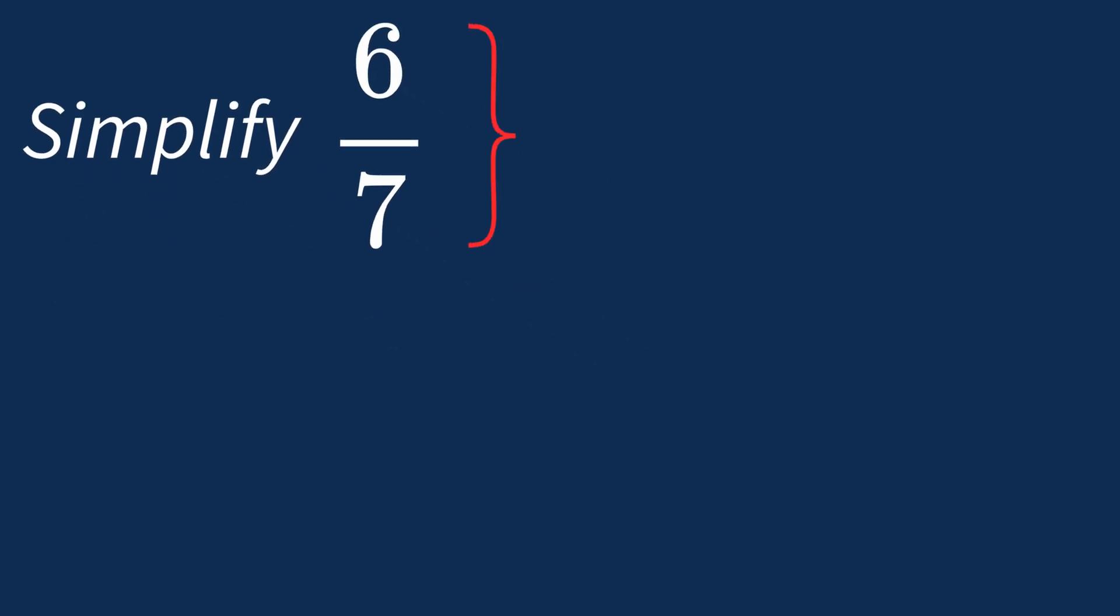When simplifying a fraction like 6 over 7, the first step is to check if there's a common factor between the top number, the numerator, and the bottom number, the denominator.